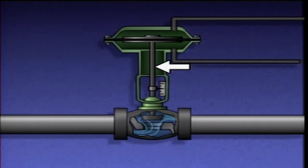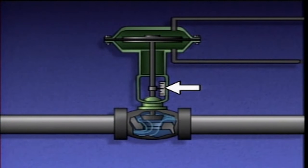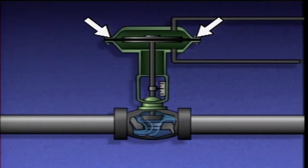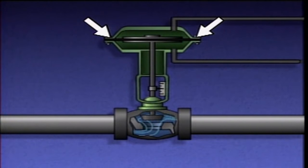Additional components include a stem and a valve position indicator, which shows the position of the valve. The center of the diaphragm is supported by metal plates, and the outer edge is sandwiched between the rims of the upper and lower casing halves to form an airtight seal.